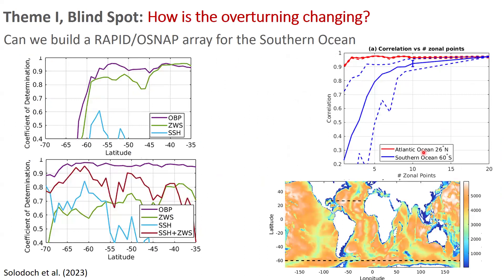Another blind spot is that we don't really understand the overturning circulation in the Southern Ocean. We have measures in the North Atlantic, but in the Southern Ocean it's a big question mark whether we can observe the variability in the overturning circulation. There has been a recent paper suggesting it's not too difficult to observe the overturning circulation in the Southern Ocean if you smartly design your observing network. Getting a better estimate of the overturning circulation would help close carbon, heat, and freshwater budgets.